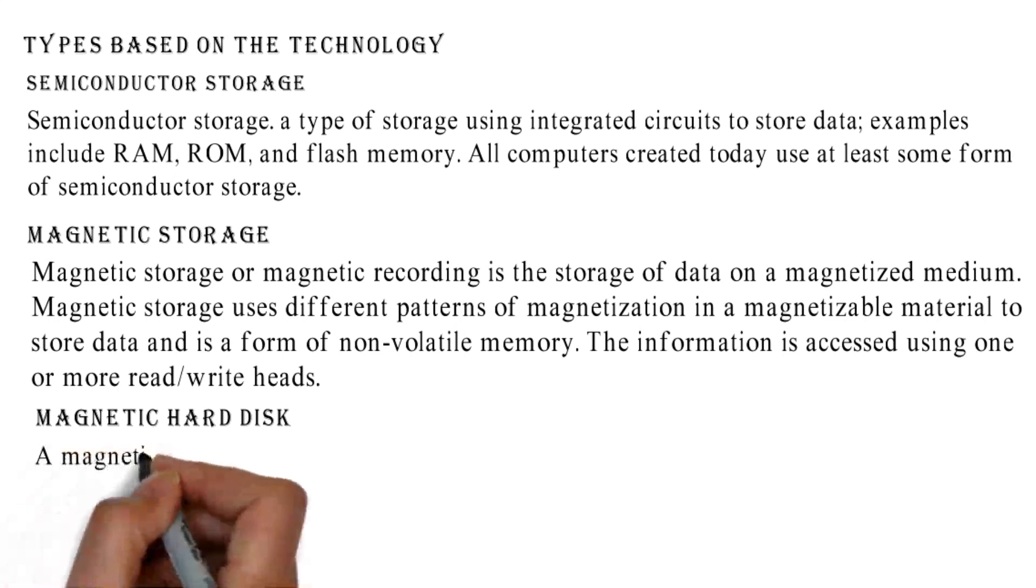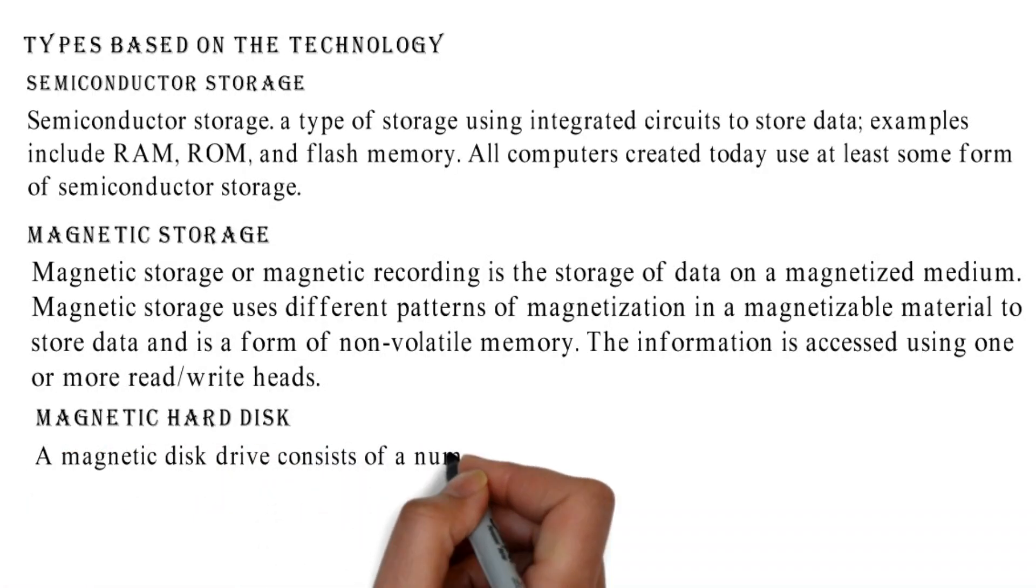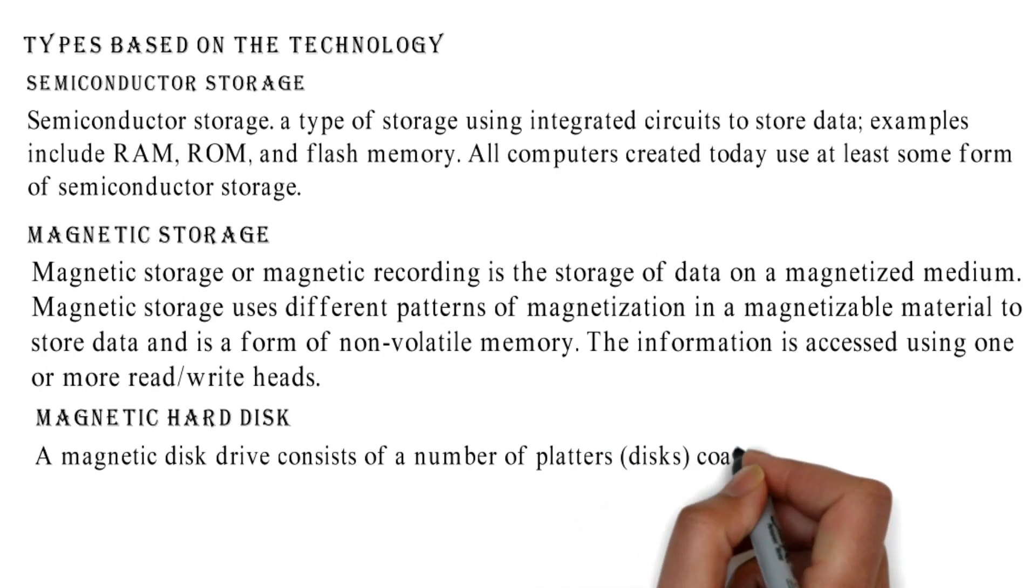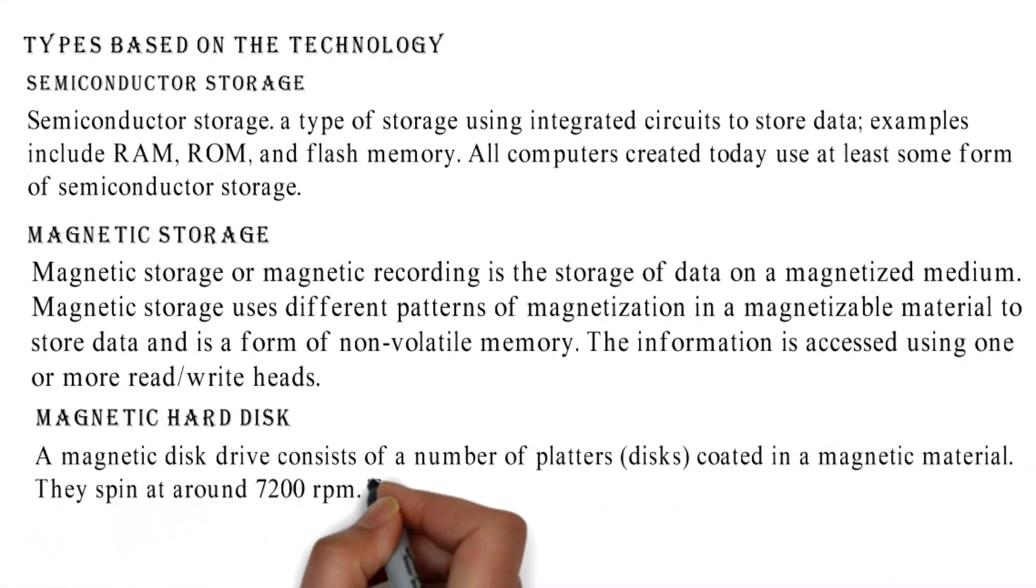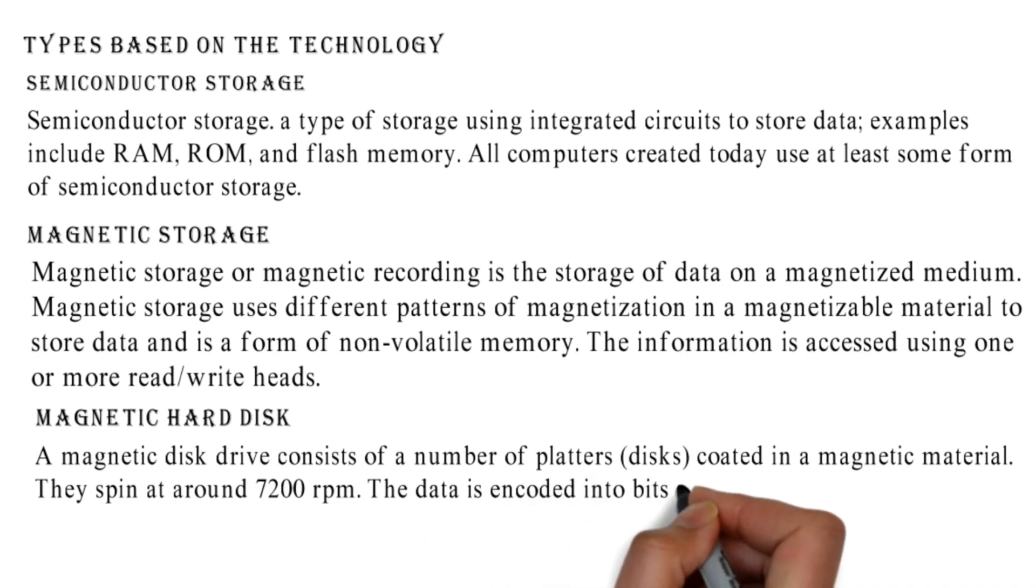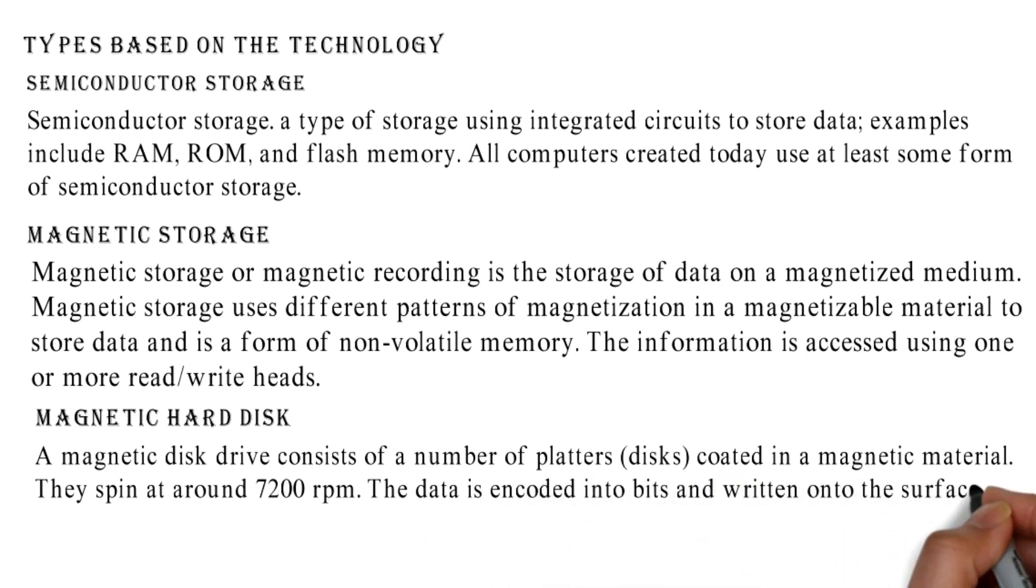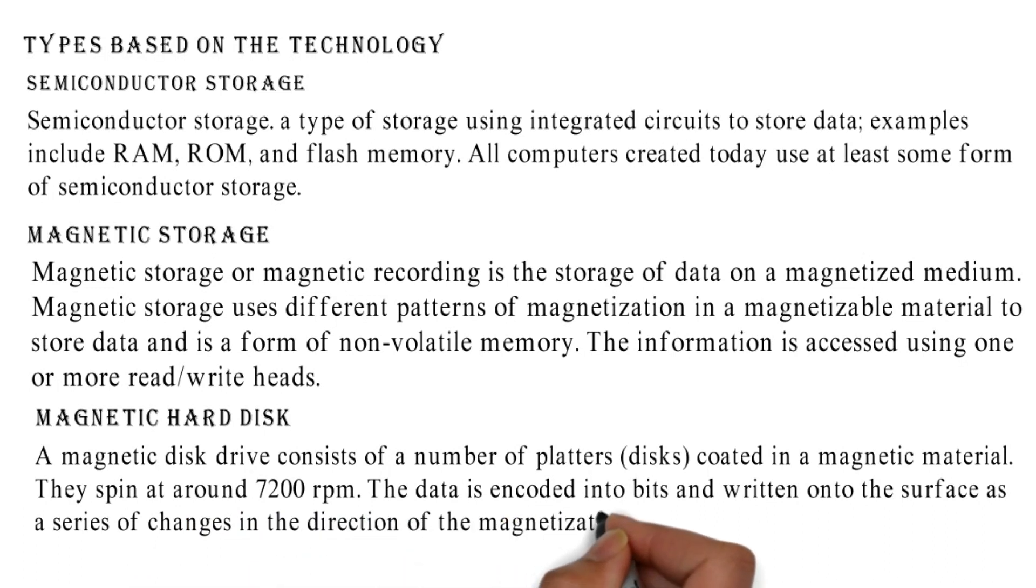Magnetic hard disk: A magnetic disk drive consists of a number of platters (disks) coated in a magnetic material. They spin at around 7,200 RPM. The data is encoded into bits and written onto the surface as a series of changes in the direction of the magnetization.